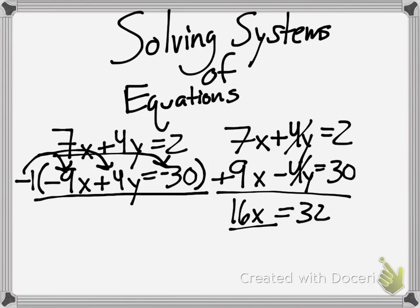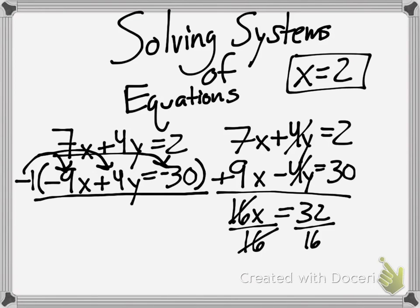Now, to get x by itself, it's multiplied to the 16. So, you're going to divide 16 on both sides. That's an inverse operation. The 16's cancel. And it leaves you with x equals 32 over 16, if you put it in a calculator, is x equals 2. So, we found out what our x value is.